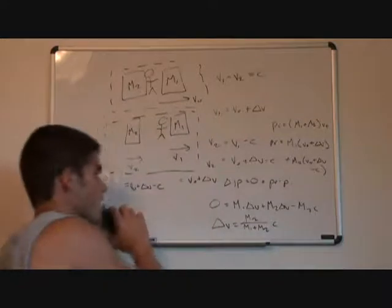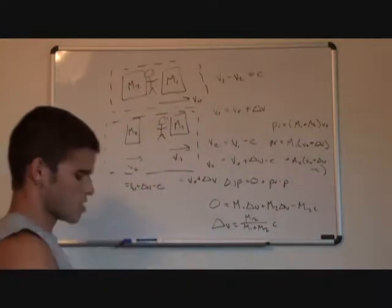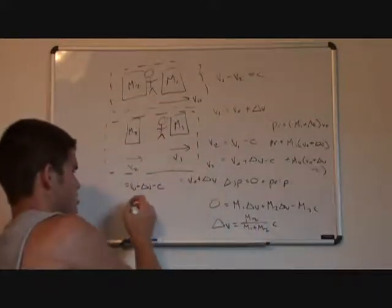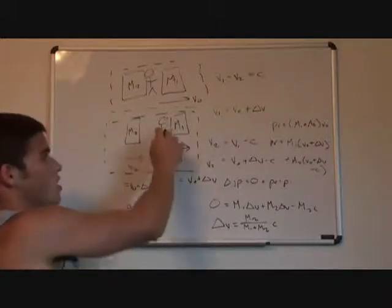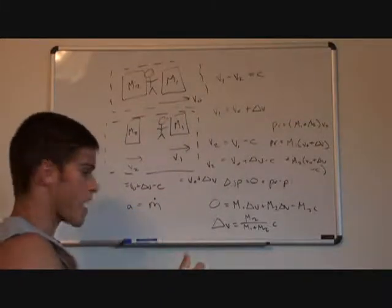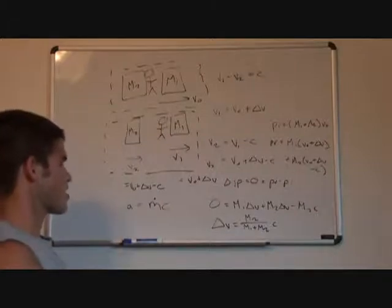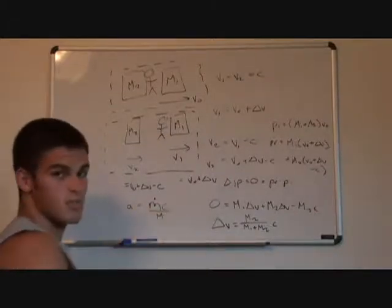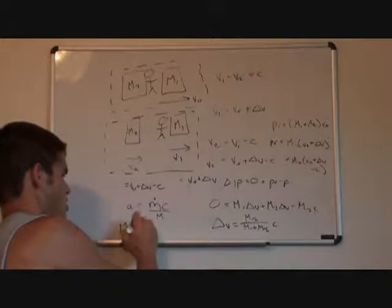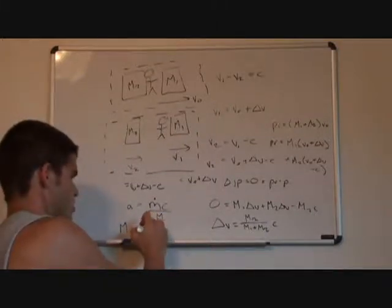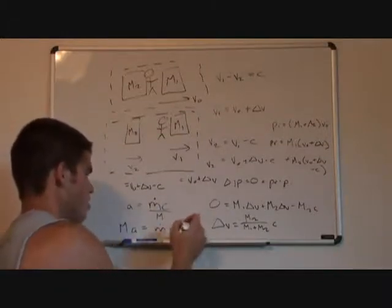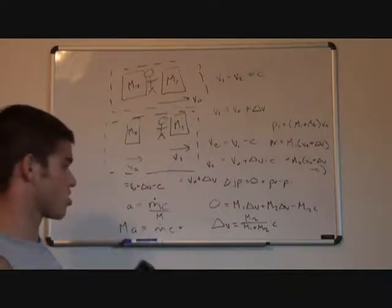And I don't expect you to follow the math right now but I can go over it later if you'd like. But basically what happens is this equation in that continuous limit turns into this. It turns into the acceleration of the man is equal to the rate at which he's throwing back mass times the speed at which he's throwing back mass divided by his mass at any given point in time. Now, we can actually rearrange this equation slightly to be his mass times his acceleration is equal to the mass flow rate times the speed at which it's leaving. And we know that someone's mass times their acceleration is also the force that they're feeling.